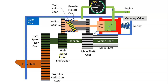The female gear is driven by the high speed pinion shaft gear and the propeller reduction gear system, and is also driven by the power turbine through the torsion shaft. The male gear is driven by the main shaft. The two drive gears turn at the same rotation speed, but any twisting of the torsion shaft caused by the torque reaction produces an angular difference between the two gears.